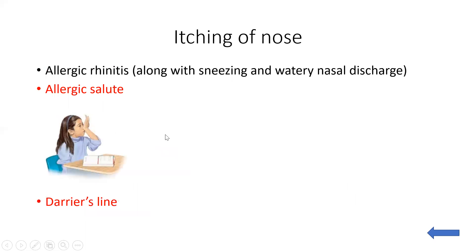Itching in the nose is most commonly seen in allergic rhinitis, where other symptoms include sneezing and watery nasal discharge. In allergic rhinitis, the patient constantly rubs the tip of the nose with the palm, giving the impression of saluting — this is called the allergic salute. Because of this repeated rubbing, a dark line forms over the dorsum of the nose called Dennie's line. Allergic salute and Dennie's line are features of allergic rhinitis.